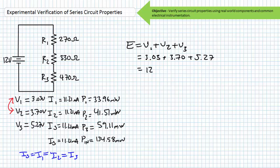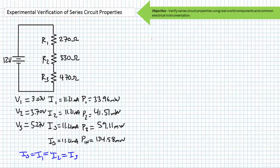Stay organized and do yourself the favor of making sure everything is in its place before you begin. Last but not least, make sure the components you intend to use can handle the expected power dissipation. Our largest power figure is R3 dissipating 59.11 milliwatts — less than a butterfly's sneeze. The cheapest quarter-watt, i.e., 250-milliwatt, resistors will do the trick quite nicely. Armed with expectations, we're ready to begin the lab.